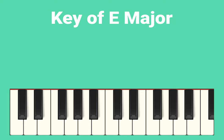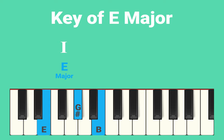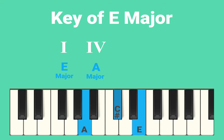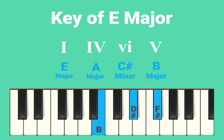The scale of E major has E, F sharp, G sharp, A, B, C sharp, and D sharp. Taking the chord progression we had before: chord one would be E major, chord four would be A major, chord six would be C sharp minor, and chord five would be B major. A chord progression cannot be copyrighted, so it's fine to borrow a chord sequence from an existing piece and use it in your own music. The Roman numeral system helps you work out the progression and easily convert it into whichever key you'd like.